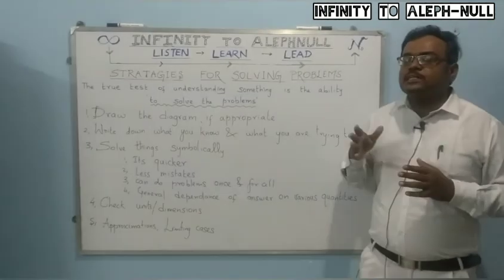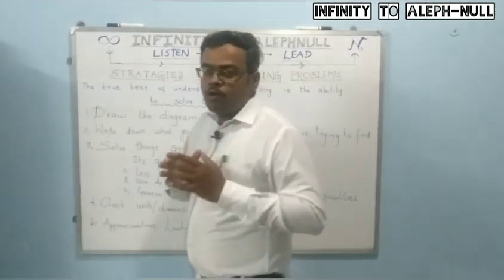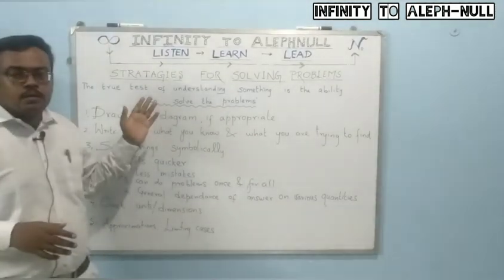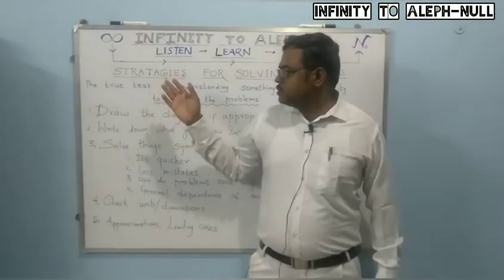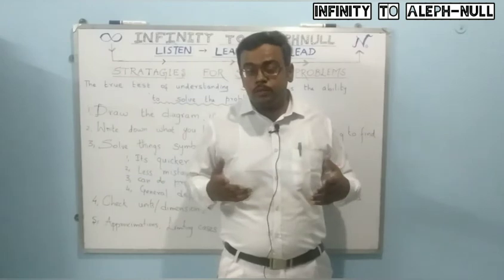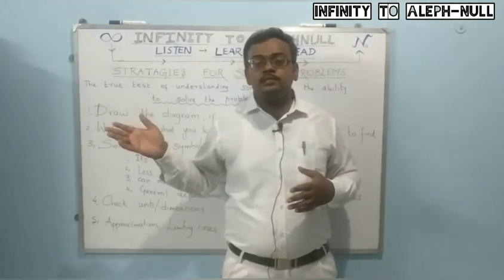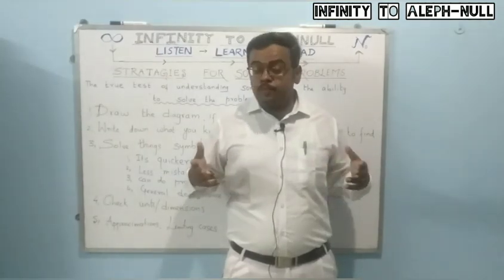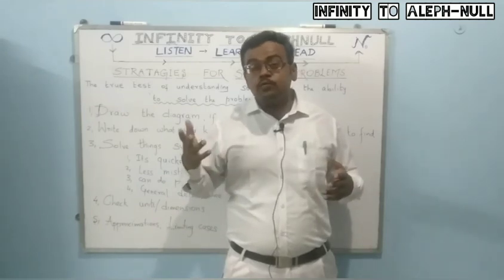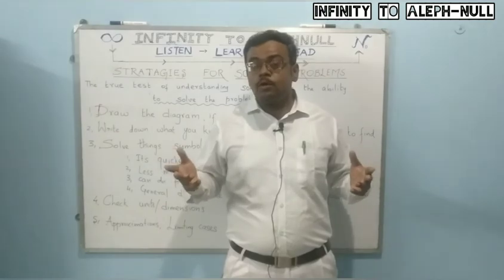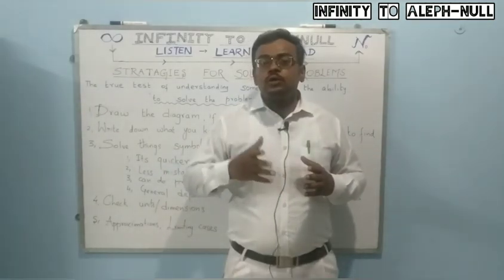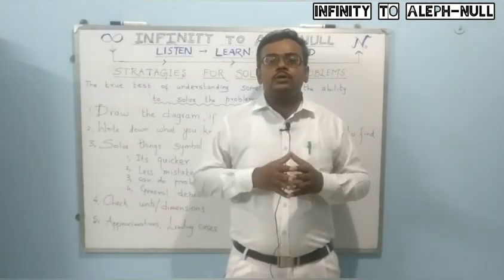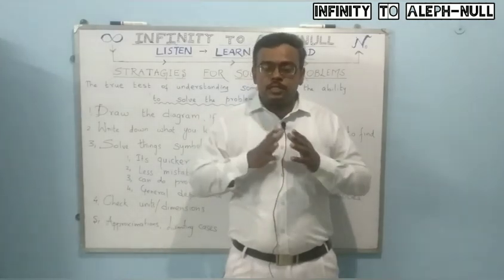These are the five general strategies to be followed when solving physics problems: draw a diagram, write down known and unknown quantities, solve symbolically, check units, and use limiting cases. You have to keep these strategies in the back of your mind when tackling problems. Of course, they are not sufficient by themselves without understanding the physical concepts, but keeping them in mind will be considerably helpful in solving problems. Thank you.